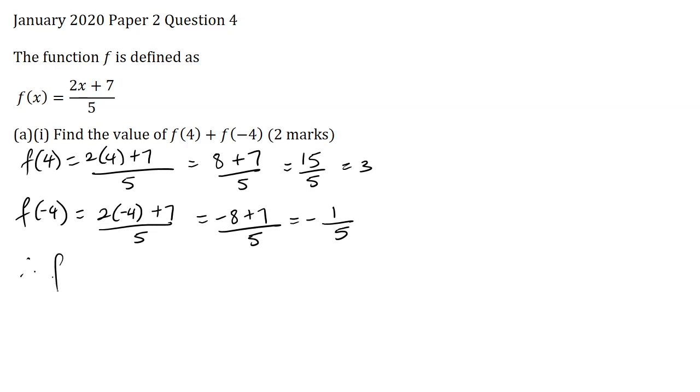Therefore, f of 4 plus f of minus 4 is equal to 3 plus minus 1 over 5, which is equal to 2 and 4 over 5.